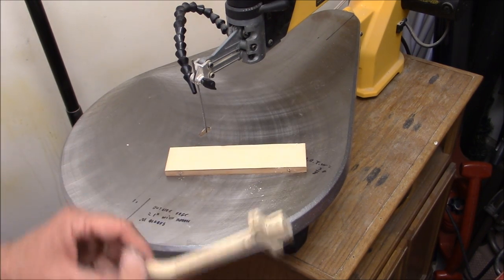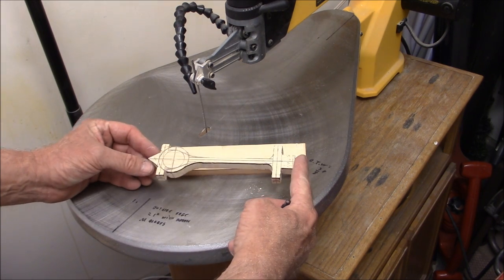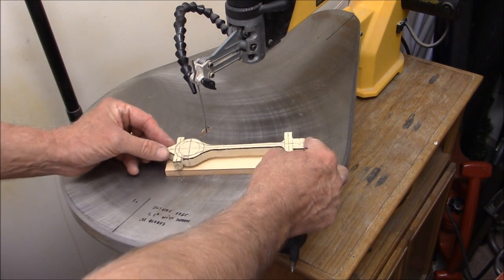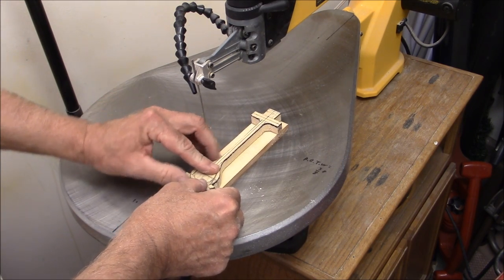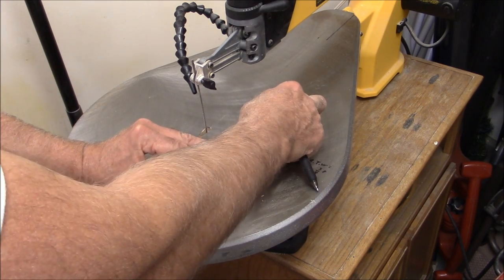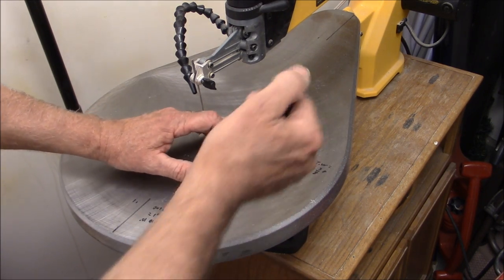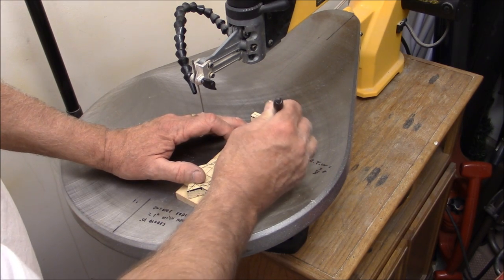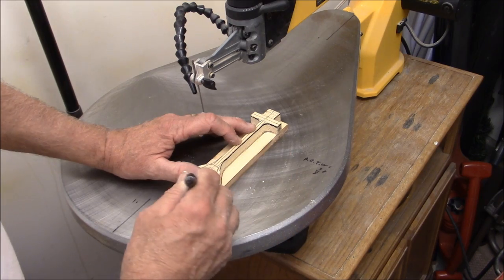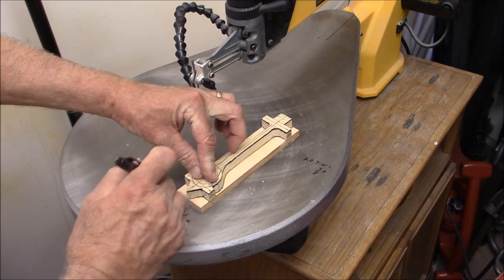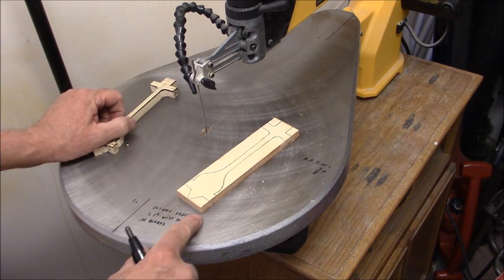Because all of my high performance cars are pretty much shaped the same, I've made a template which I use to trace out on the block to give me a guide for cutting out the body. There we have it.